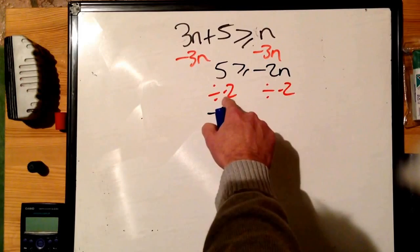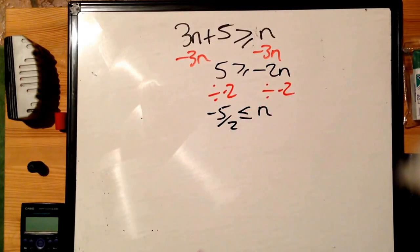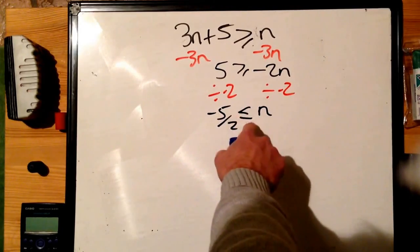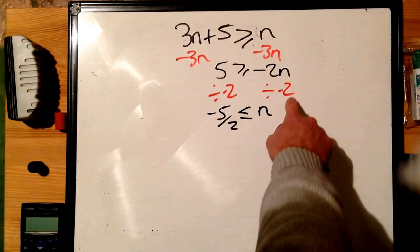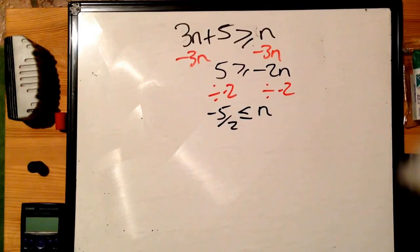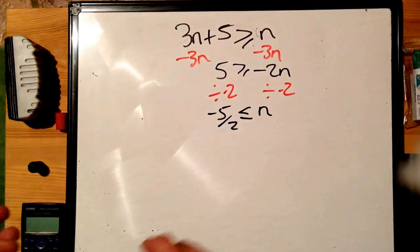Now, because we're dividing by a negative number, this sign has to change around. We end up with the same solution as we had before: n is bigger than or equal to minus 5 over 2. A lot of the time when people do it this way, they forget that division by a negative number means the sign has to change around, which is why I would always remove the smallest number of unknowns from both sides.